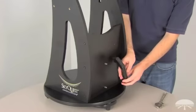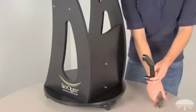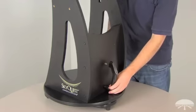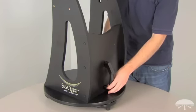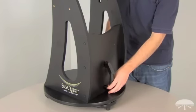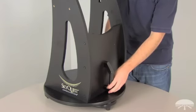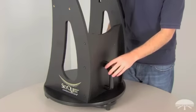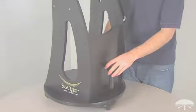Now orient the handle such that the Orion logo is facing upwards. You can hand tighten these at first. And once they're hand tightened then you can tighten them down with a wrench.